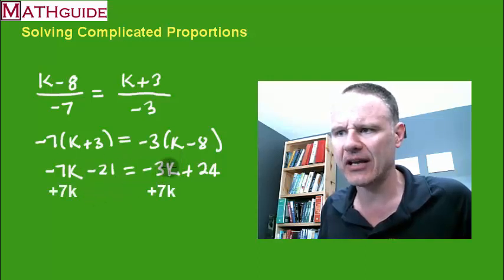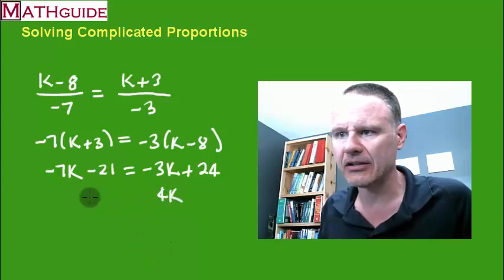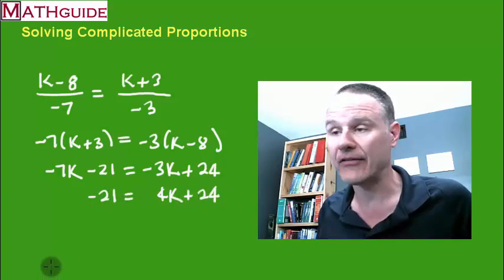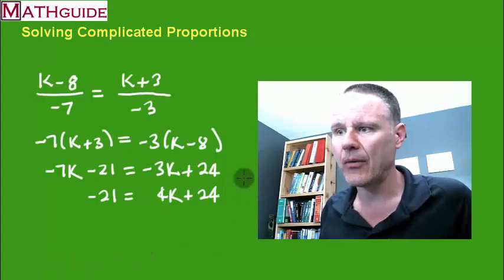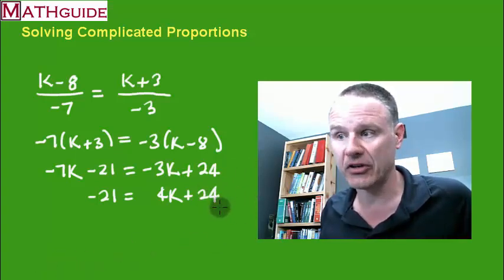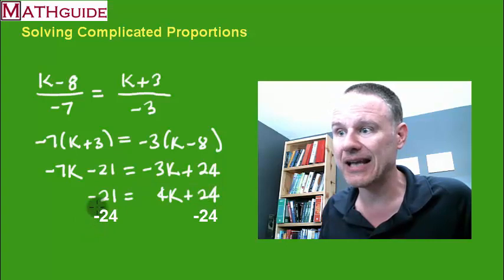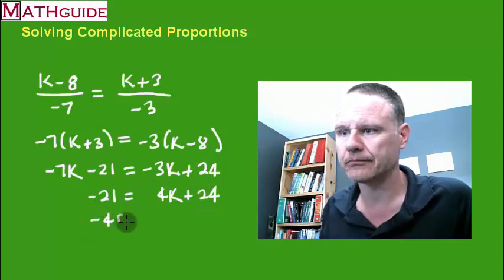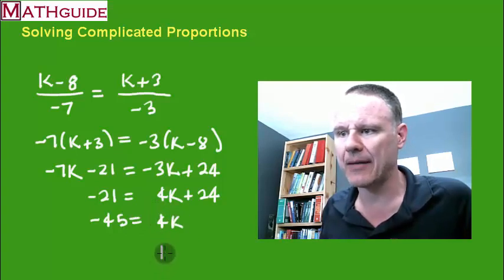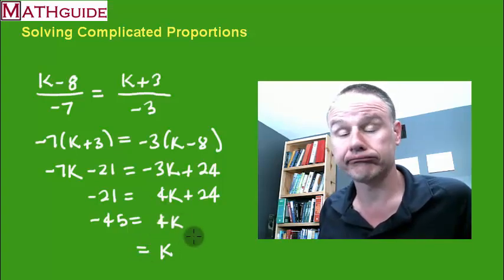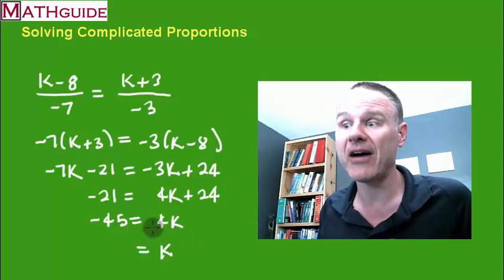Okay so if I add 7k to negative 3k I get 4k. Alright that's the only thing that has changed. I just added 7k to both sides. Okay now I want to get rid of this positive 24. So I'm going to subtract 24 from both sides. So negative 21 minus 24 is negative 45. Okay now what's the last step? Well to get k alone I got to get rid of this 4. Since I'm multiplying 4 times k, the inverse would be to divide both sides by 4.